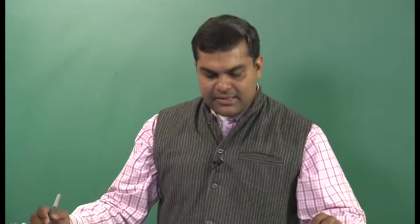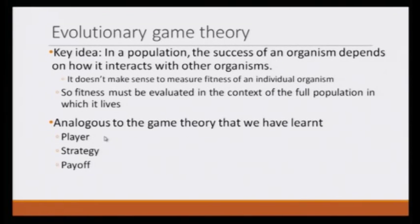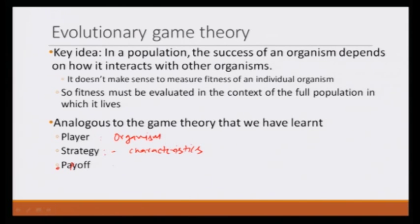If we think of evolutionary game theory as analogous to regular game theory: the players are living organisms — animals or plants. The strategies are encoded behaviors or characteristics. The payoff is fitness, and this fitness should be evaluated in the context of other players — that is, reflected in the game matrix showing what happens when one animal interacts with another.